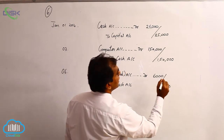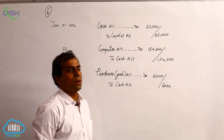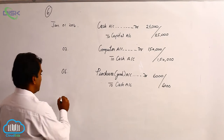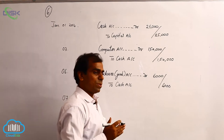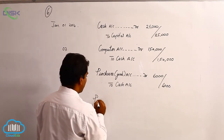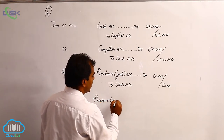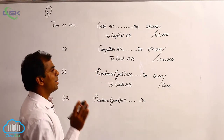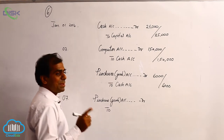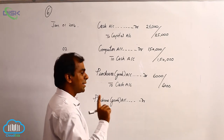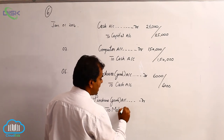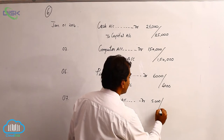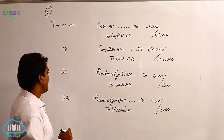The next transaction is on 7th January — purchased goods from Mahesh, naturally on credit. We are getting goods; goods are coming in, real account coming in, therefore we debit Purchases Account. We did not pay cash, but we will pay on a later date to Mahesh. Mahesh is the giver of the goods, so he comes under personal account — credit the giver. Therefore we credit Mahesh's Account. Journal entry: Purchases Account debit to Mahesh Account, ₹5,000. Narration: goods purchased on credit.